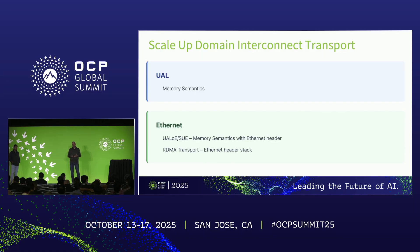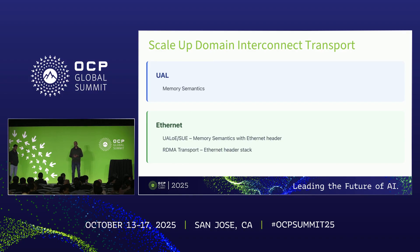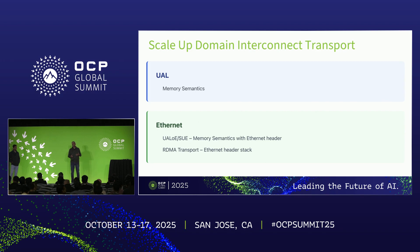The memory transactions can be multiple transactions which can be packed in a given packet, so that we can amortize the overhead of the IPG and the Ethernet header. For RDMA transport, it basically has the complete header stack of Ethernet, IP, and the IP header. This distinction is very important as we go over the performance results we're going to show later.